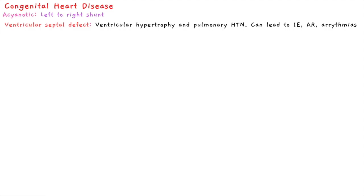Arrhythmias result when there is abnormal electrical conduction. Normally the pathway for electrical conduction is very specific and regulated. However, if there is a hole in the ventricular septum, the electrical messages cannot pass through normally, leading to abnormal electrical messages and arrhythmias.